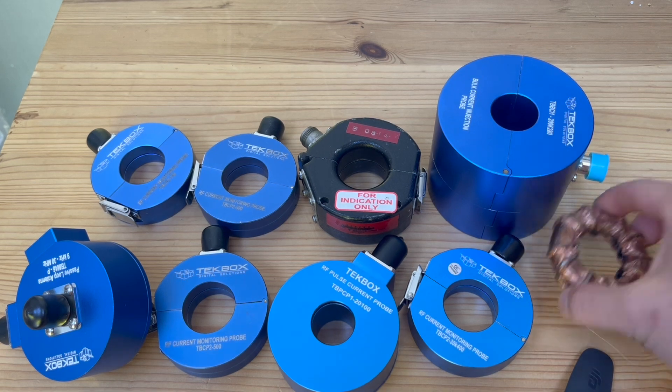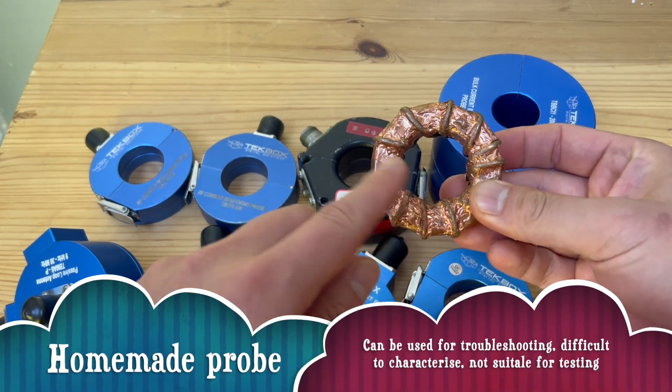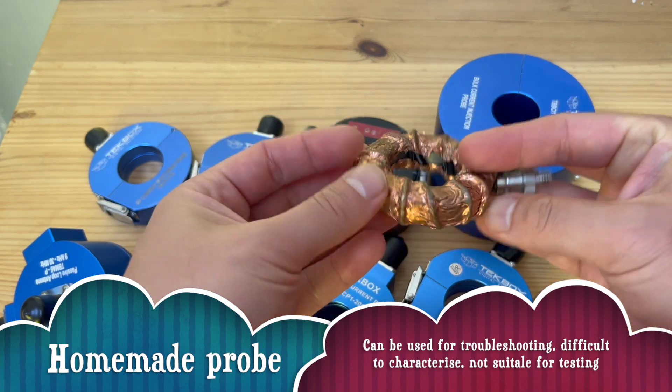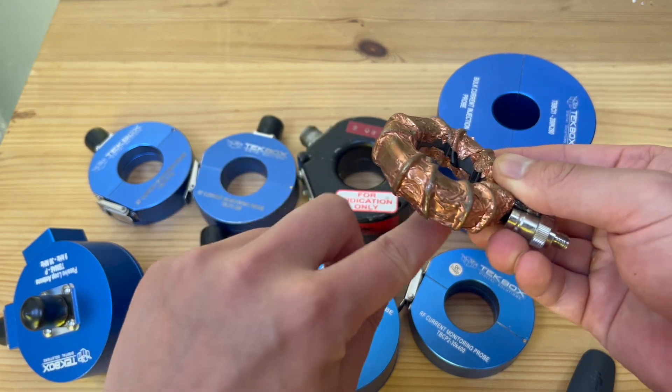Here you can see this is a homemade current probe. You can almost see the turns here, and you can see I apply some shield. This is called E-field shielding.